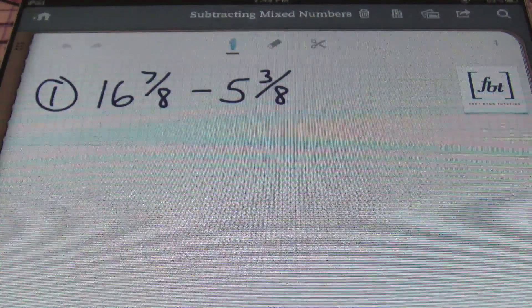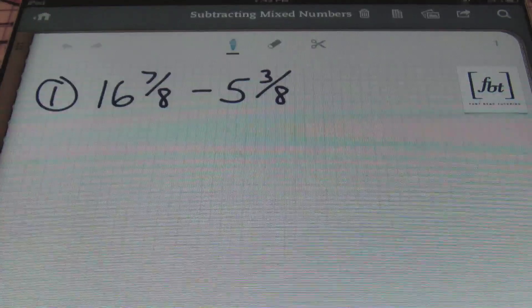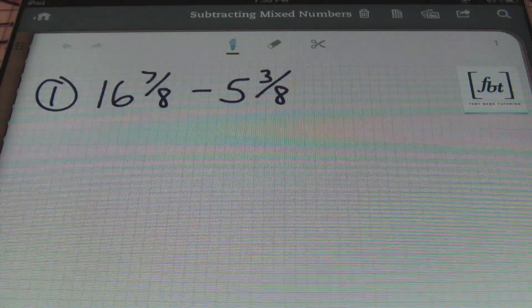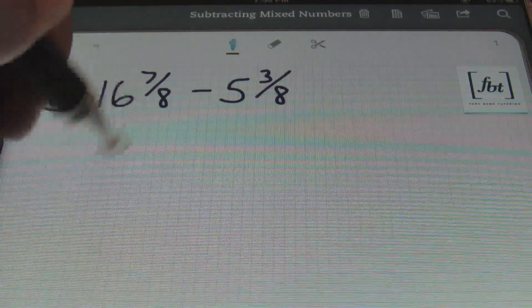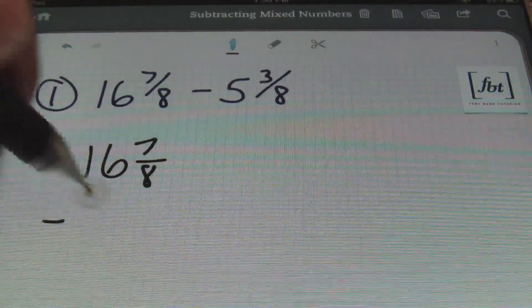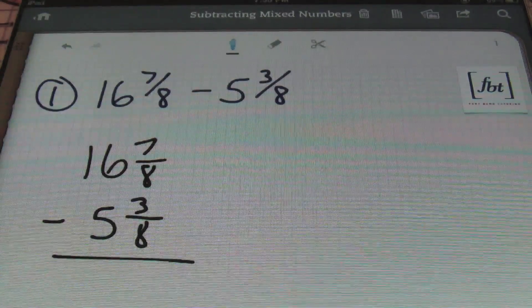So in problem number one, we have 16 and 7 eighths minus 5 and 3 eighths. I can't stand doing these problems horizontally, ladies and gentlemen, so I always write them vertically. I stack them. So that's the first thing I'm going to do. I'm going to rewrite this as 16 and 7 eighths minus 5 and 3 eighths, just like so.